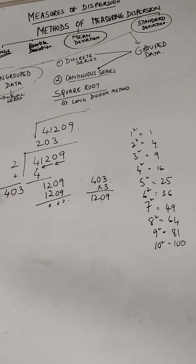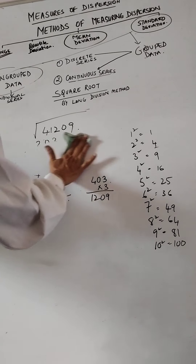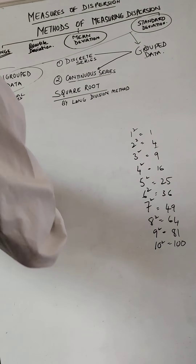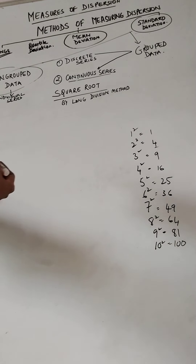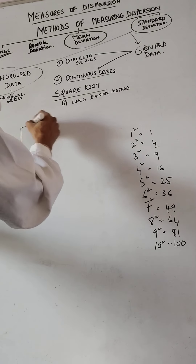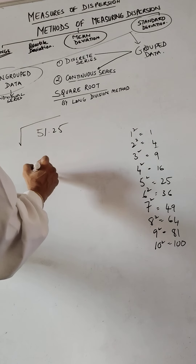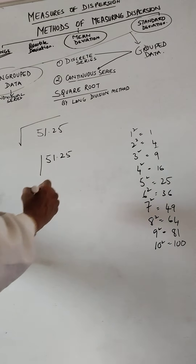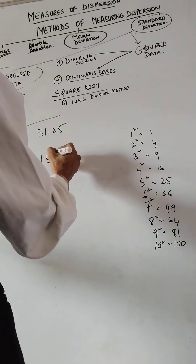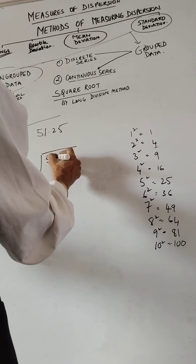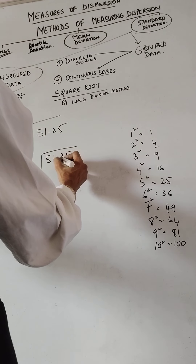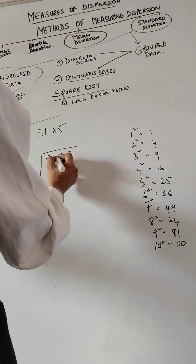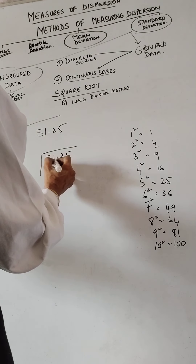Now I'd like to do one more example involving a decimal point, because you should know how to handle decimals. Let's find the square root of 51.25. I write it as 51 and 25. The key difference: before the decimal point, we pair digits from right to left as usual, but after the decimal point, we pair digits from left to right.